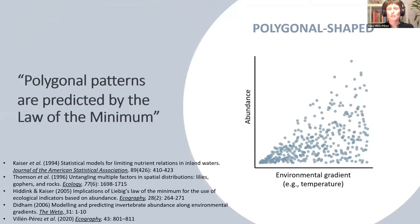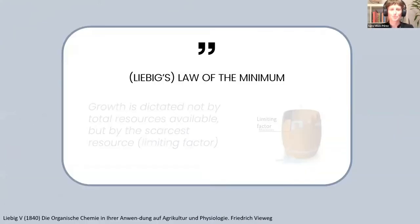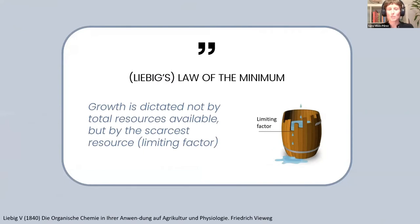Polygonal patterns are predicted by the law of the minimum, as stated by some authors in the past. The law of the minimum, or Liebig's law of the minimum, was originally conceived for plants. It states that growth is dictated not by total resources available, but by the scarcest resource, which is called the limiting factor.